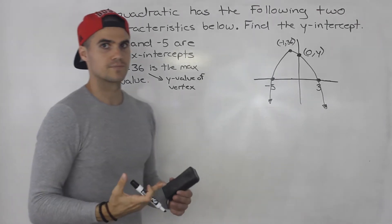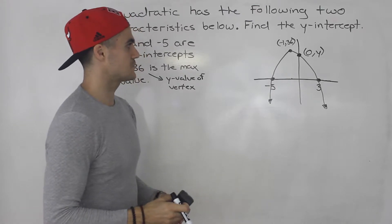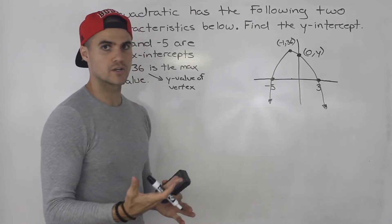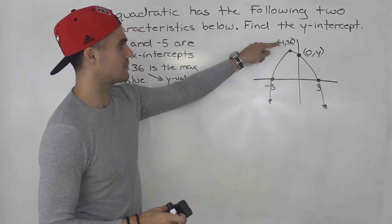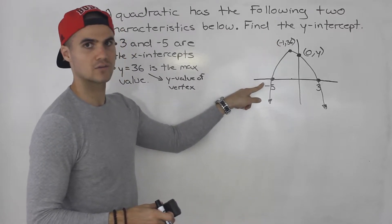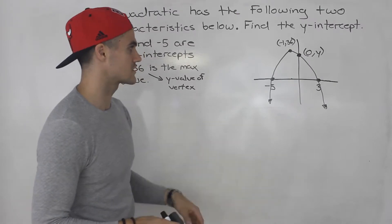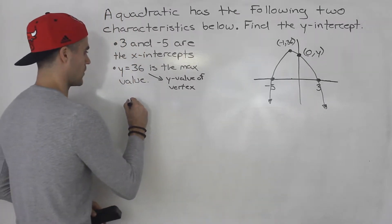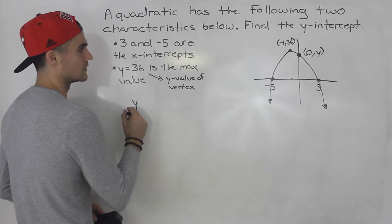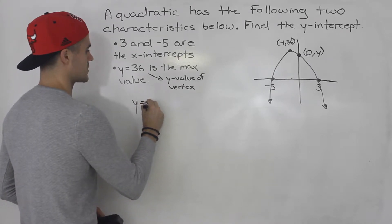Well, we have to make an equation. And in this case, we can actually make two different equations. We can make an equation in vertex form, and we could do it in factored form, because we have the x-intercepts and the vertex. So, I'm actually going to work with factored form.